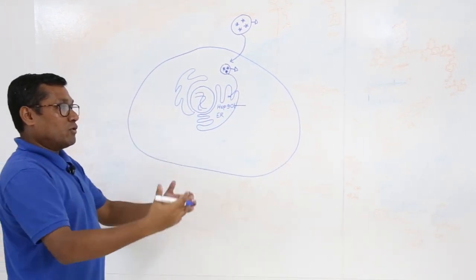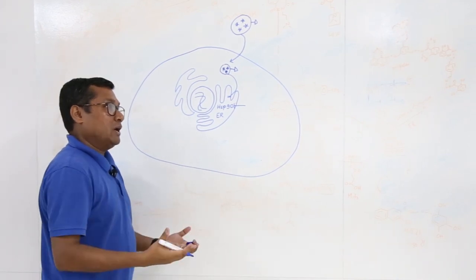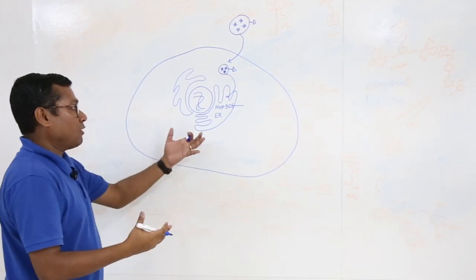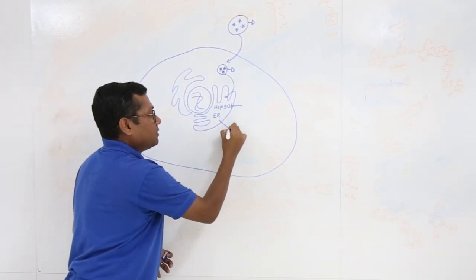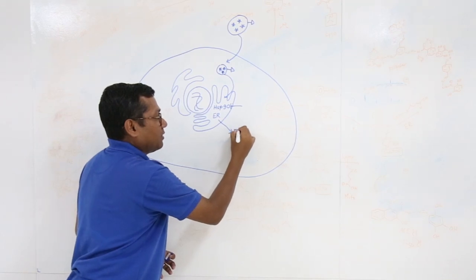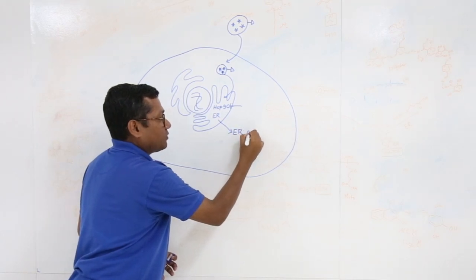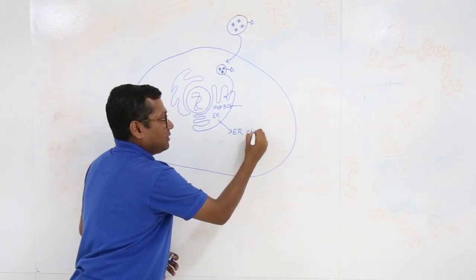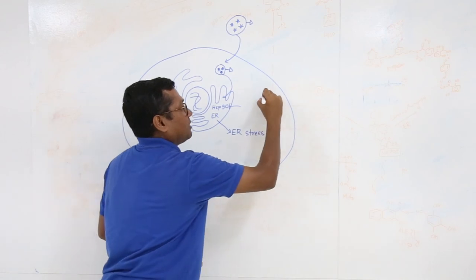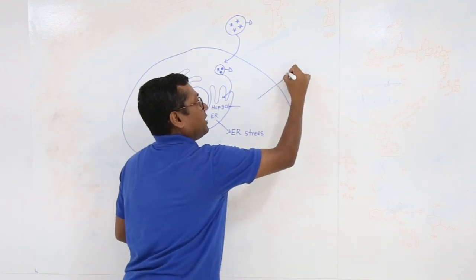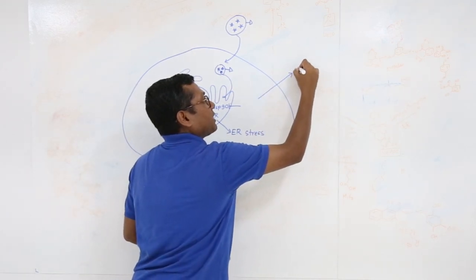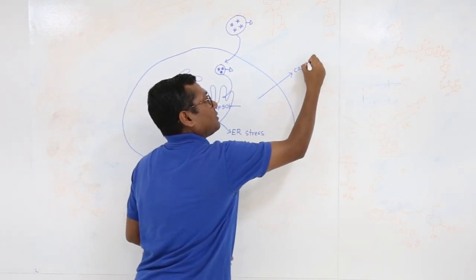When Hsp90 is inhibited, more and more unwanted proteins accumulate, and that leads to endoplasmic reticulum stress, which eventually leads to cancer cell death.